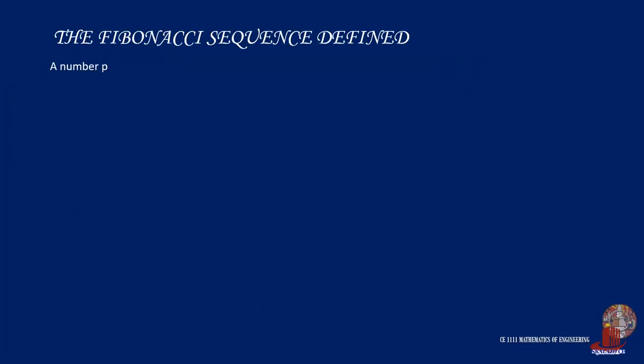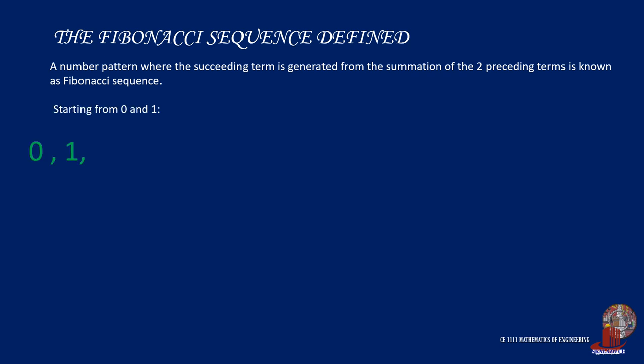The Fibonacci sequence is a number pattern which generates the succeeding term by adding the two preceding terms. The first two terms of the sequence are 0 and 1, tagged as F sub 0 and F sub 1.